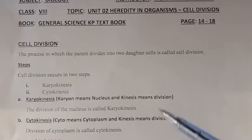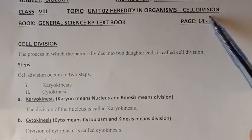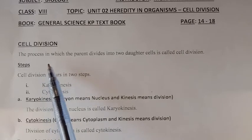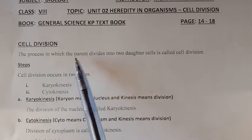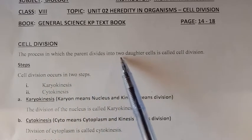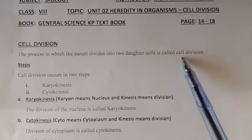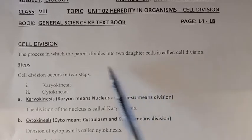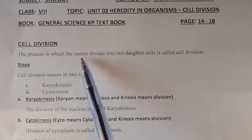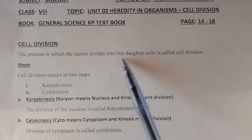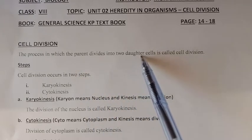Today we will discuss topic number 10: cell division. Cell division is the process in which the parent cell divides into two daughter cells. Parent cell means original cell, and daughter cell means new cells.